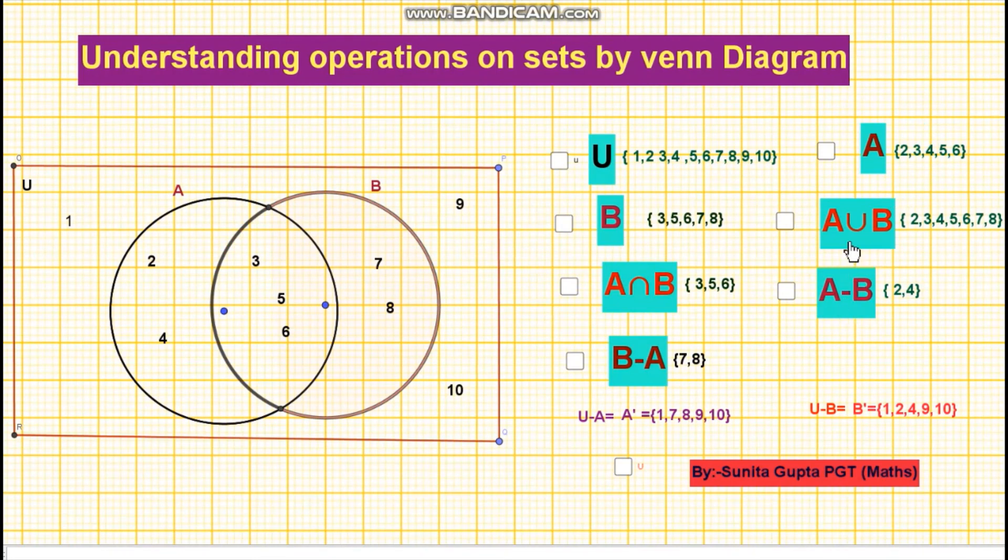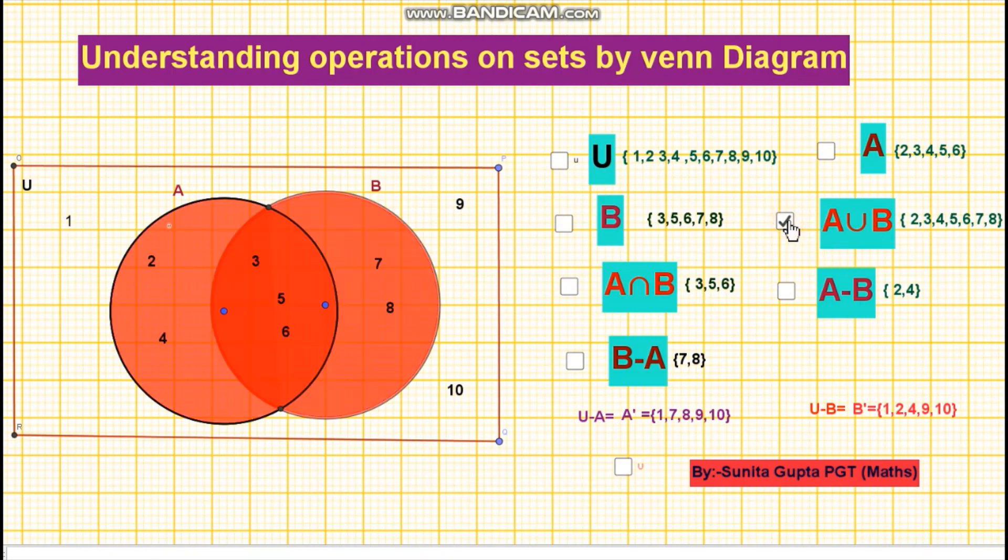First operation is union of sets. The union of set A and set B consists of all elements of A as well as all elements of set B. The common elements are taken only once. So A union B will be the shaded region as shown on your screen. So elements are 2, 3, 4, 5, 6, 7, 8.